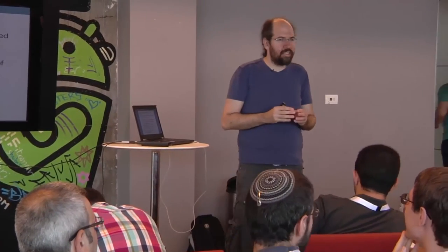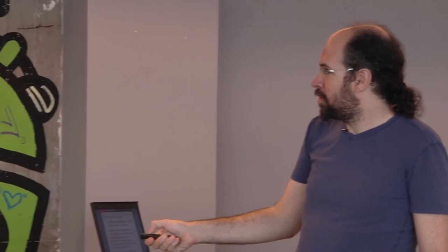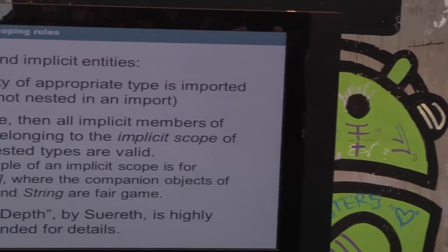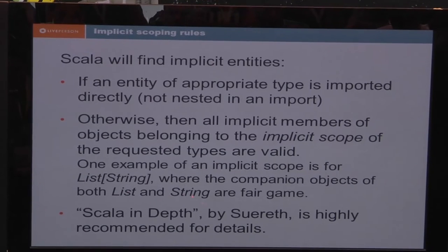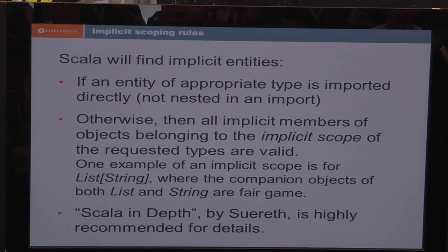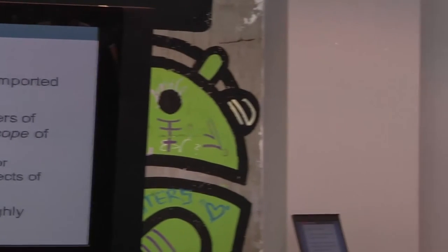You can import your implicit entity directly as a usual import, with the caveat that if you try to import two different implicits to the same name, you'll get the last one or the compiler complaining about ambiguity. Otherwise, there's implicit scoping of the types involved, and the rules get complicated. For example, if I try to use a method defining a parameter of list string, it's going to look both in the companion object for list and the companion object for string.